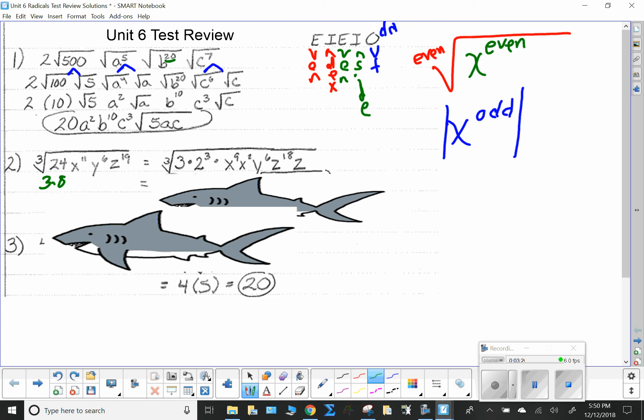Remember, this is understood to be a 1 here. Break it down. Write it out. Now, remember, because it's a cube root, EIEIO doesn't count.